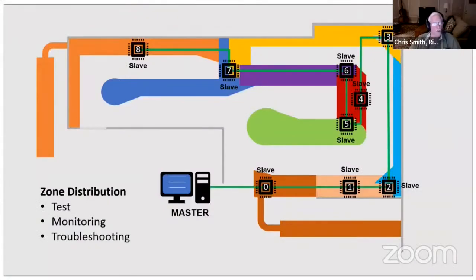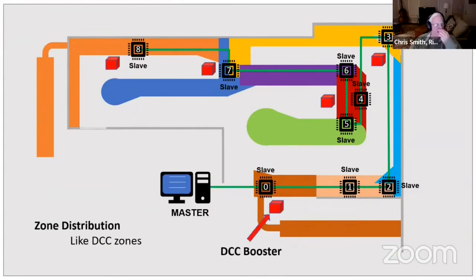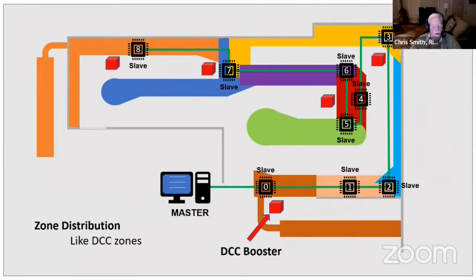Node distribution — no ganging in one spot — is very important. Break the layout up, much like DCC booster zones. You can then easily troubleshoot, document, and maintain. Think of it as eight separate layouts working together rather than one big layout.